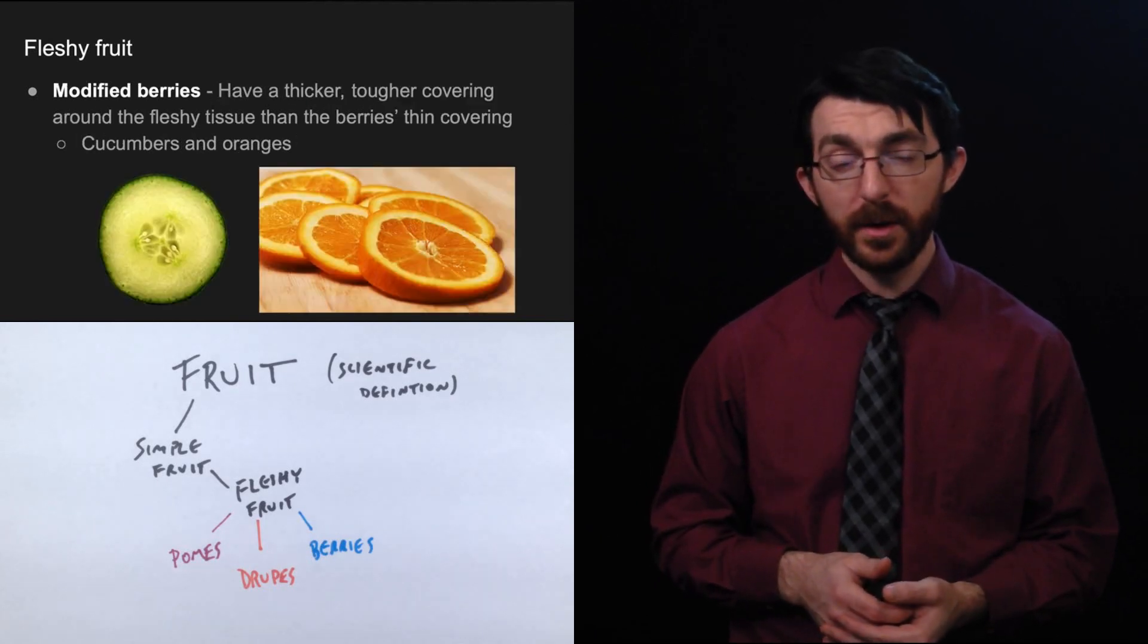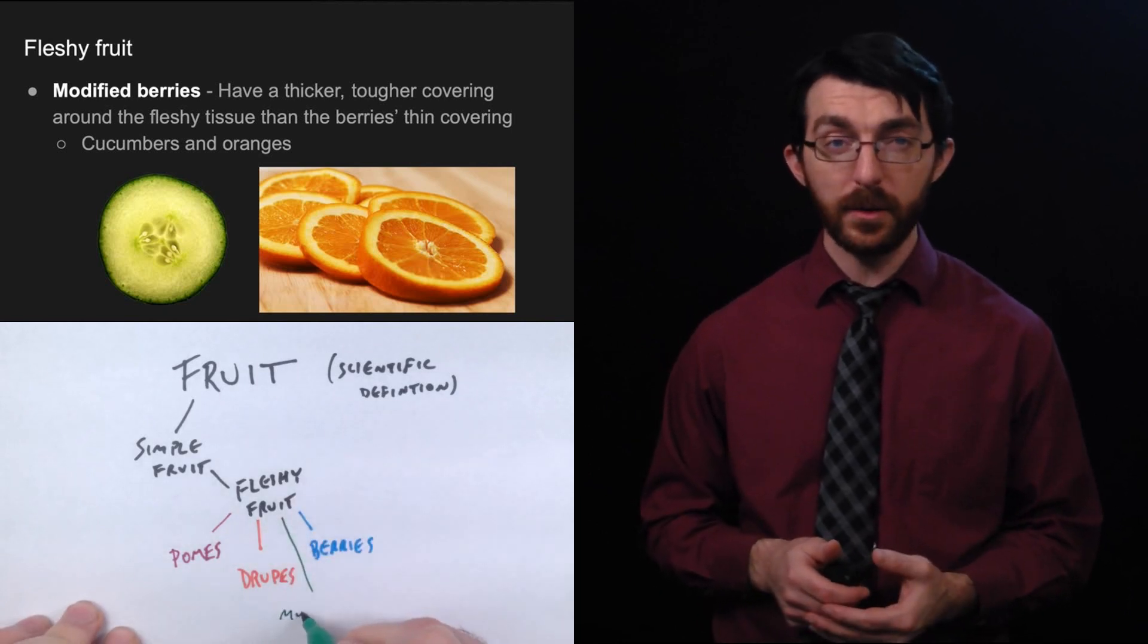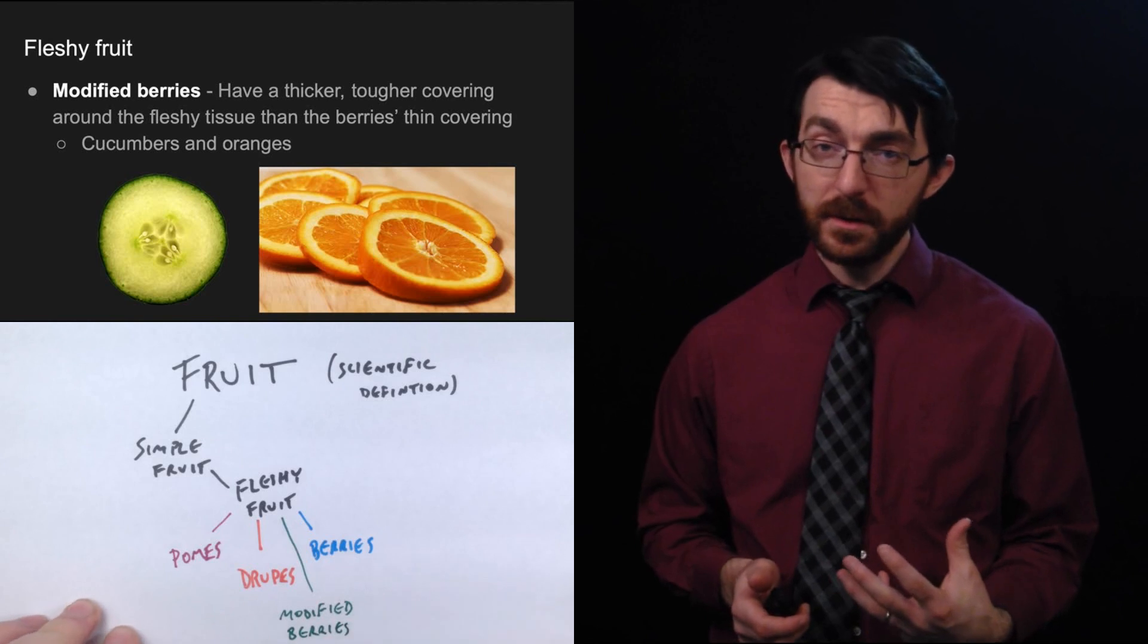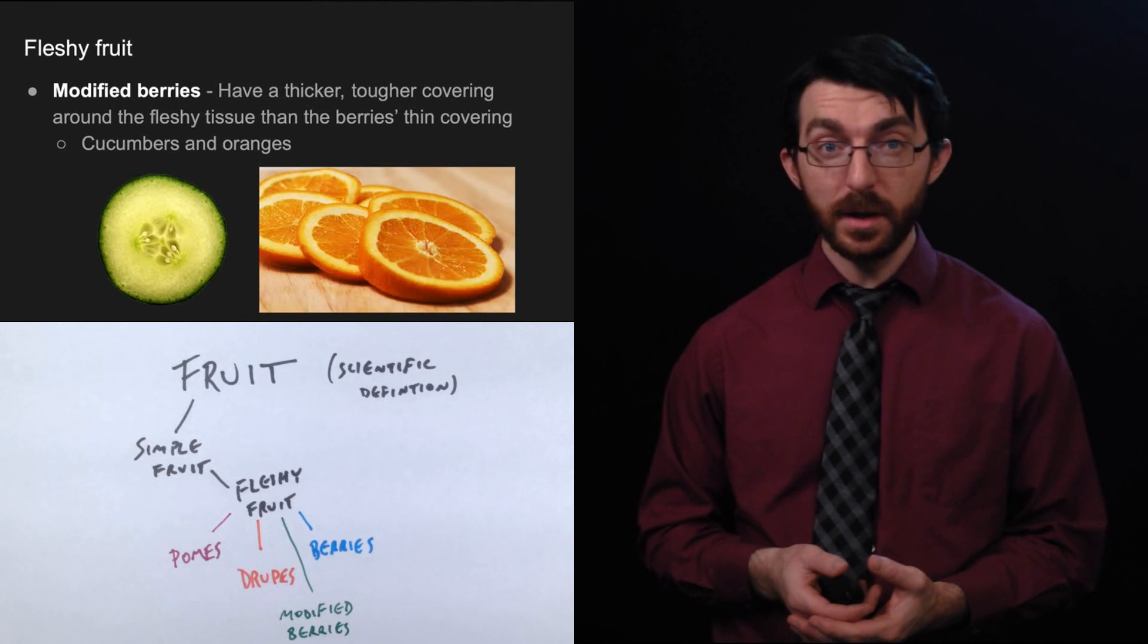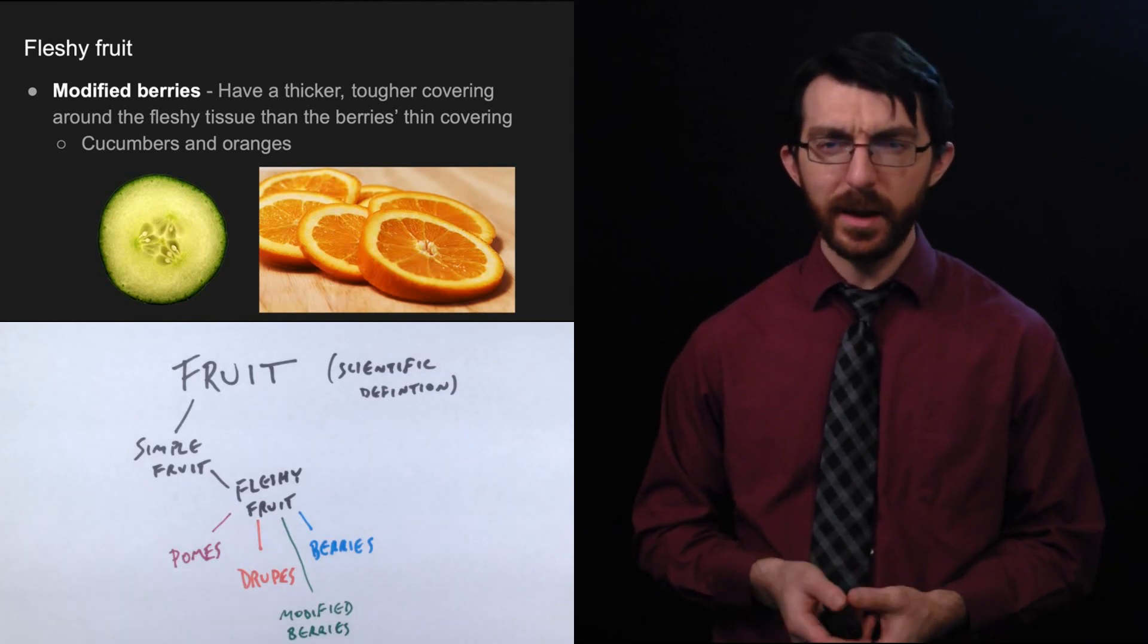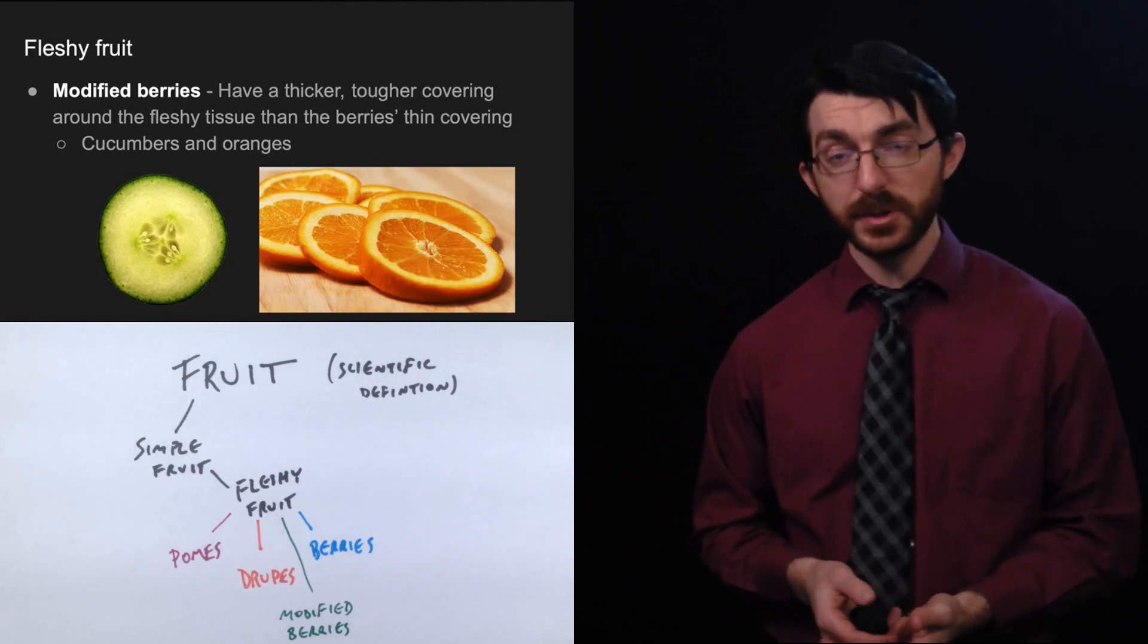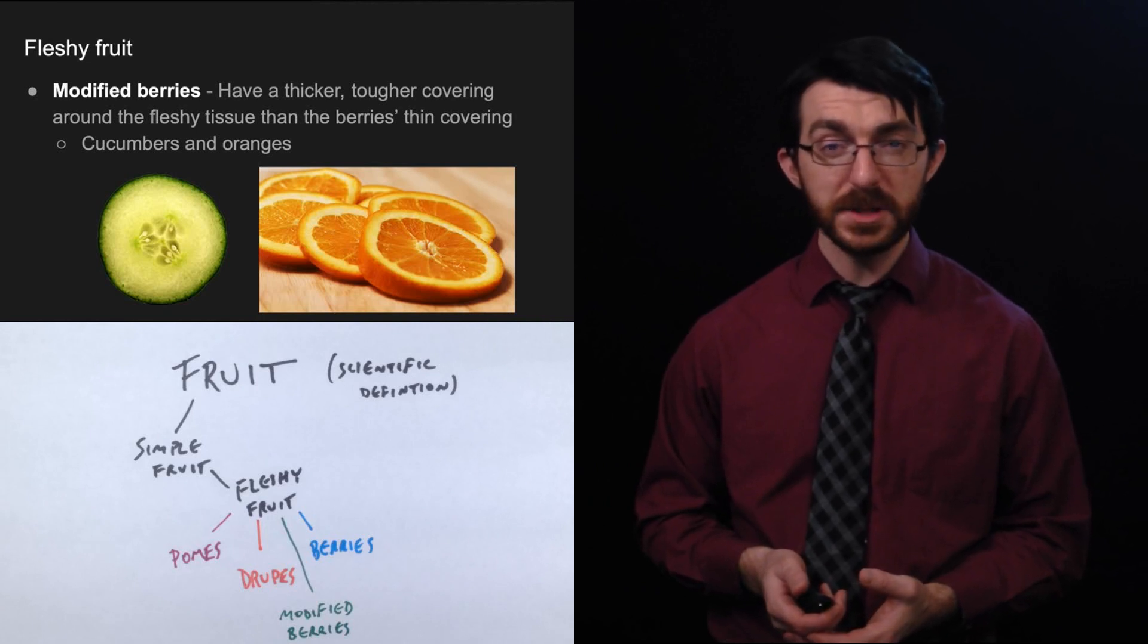All right, moving on. There is something which is similar, but it's different enough to warrant its own category. Call it like modified berries or like berries with an asterisk. So a modified berry has a thicker, tougher covering, call it like a rind, maybe, around the fleshy tissue. Whereas the berries just have like that really thin covering, you know, like the skin of a grape or of a tomato is very, very thin. But the skin of something like a cucumber or an orange is a lot more substantial. So there's cucumber, our second fruit, which is typically in the vegetable category.